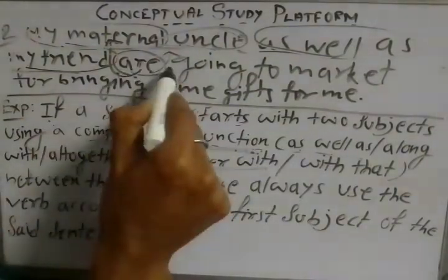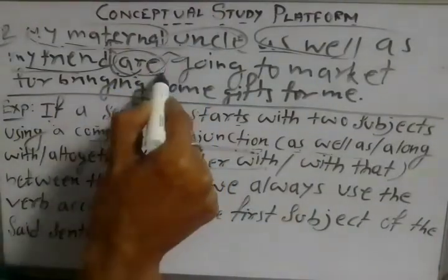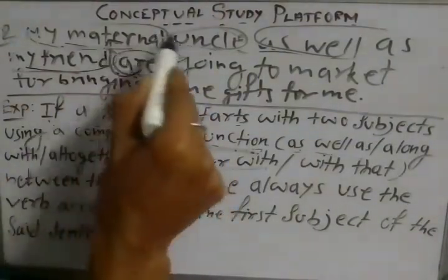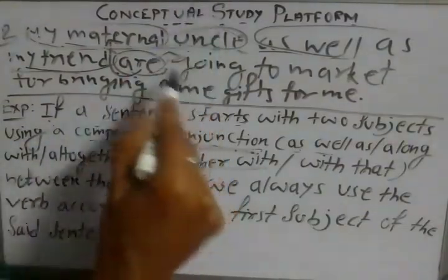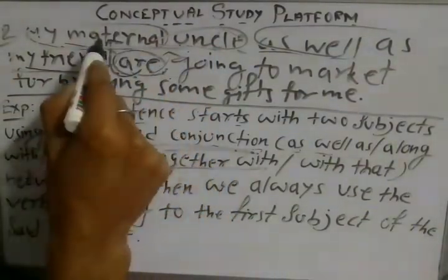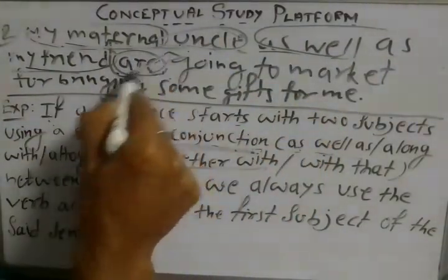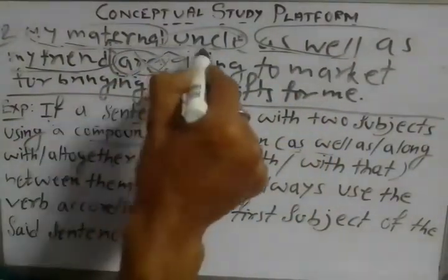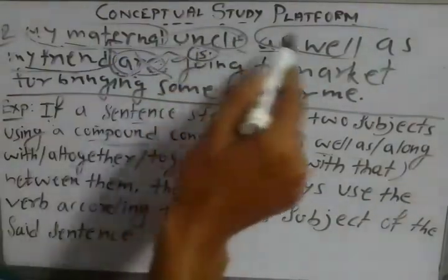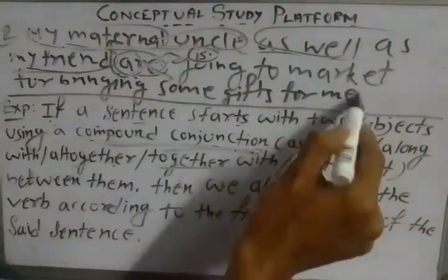'Are' is not a singular verb. In simple present tense, the singular verb is 'is'. So the accurate answer is 'is' in place of 'are'. The correct sentence is: 'My maternal uncle, as well as my friend, is going to market for bringing some gifts for me.'